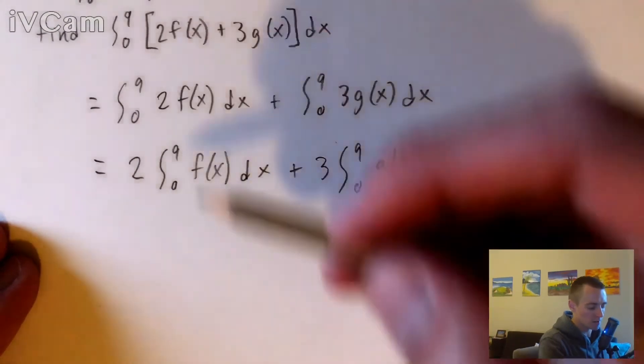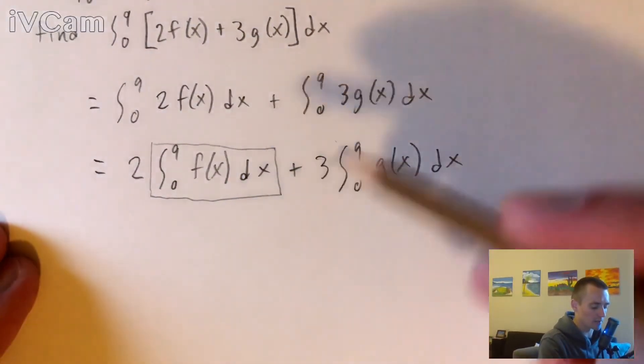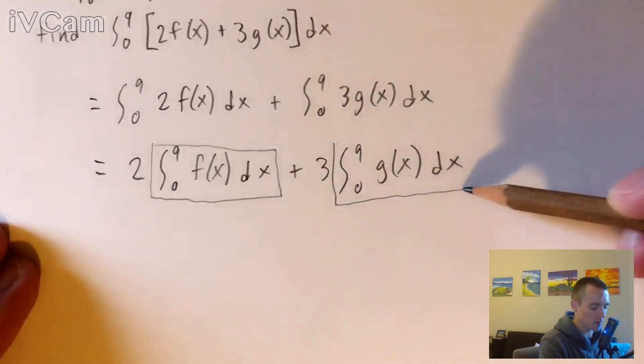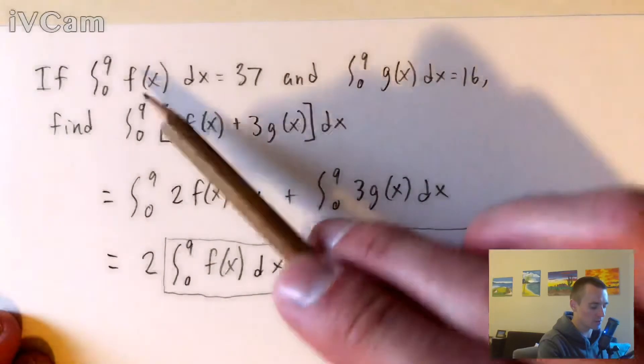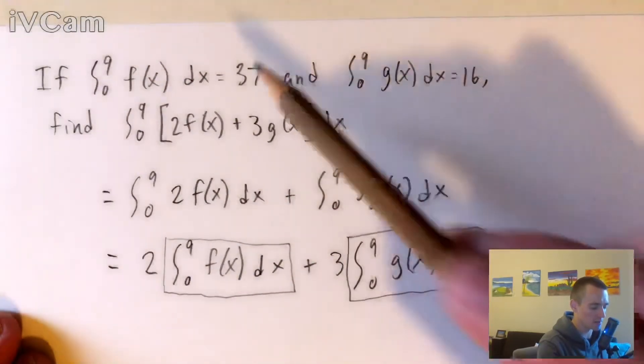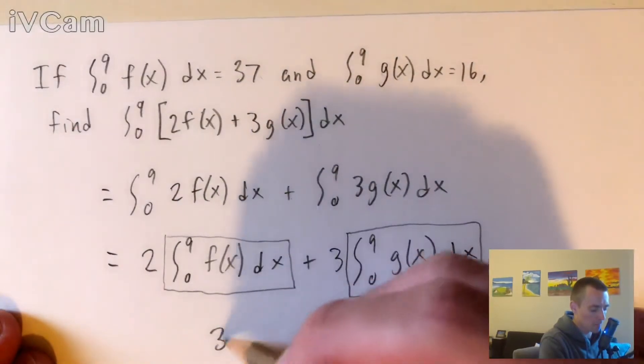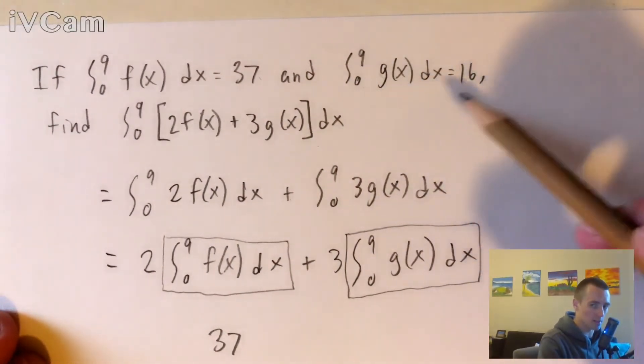So now, notice we have this piece here, the integral from zero to nine of f(x) dx and the integral from zero to nine of g(x) dx. And that's exactly what we were given. We actually know the integral of f(x) from zero to nine is equal to 37. And we know the integral from zero to nine of g(x) dx is 16.